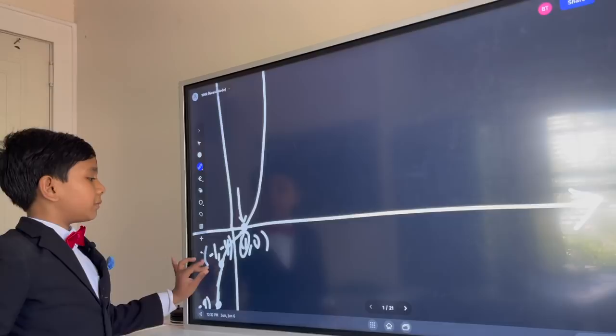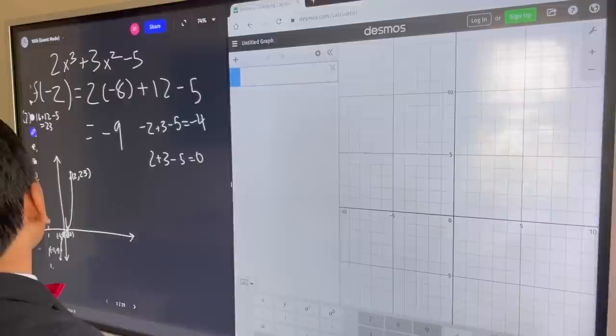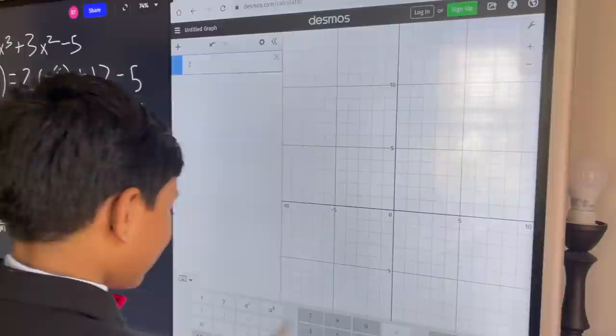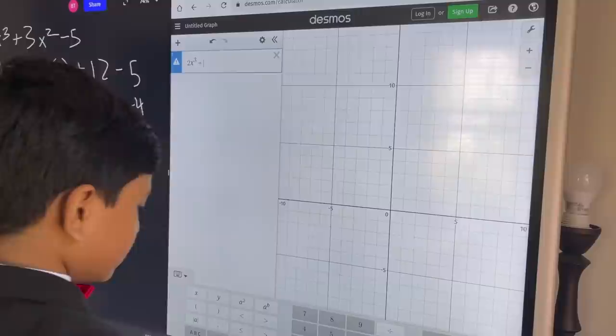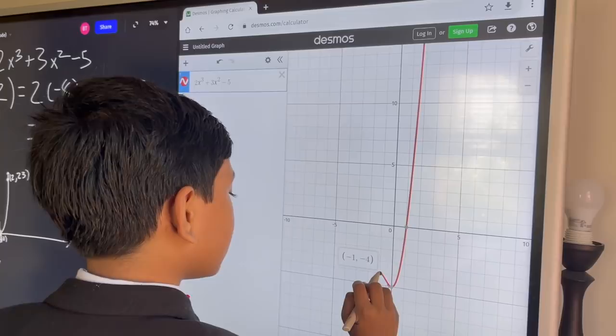Alright, thank you everybody for watching and now we're going to go to Wolfram Alpha. So 2x cubed plus 3x squared minus 5. And as you can see, it has no root. It might go up for a little time here but not enough to reach the surface. Thank you everybody for watching and we'll see you next time.